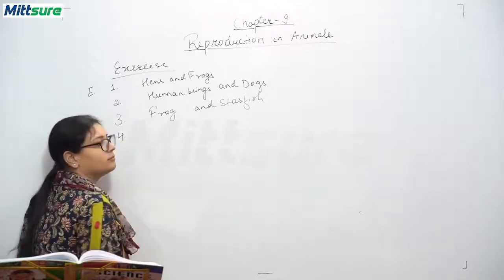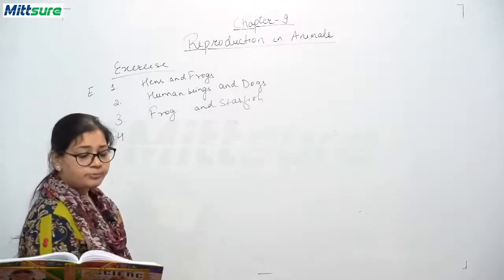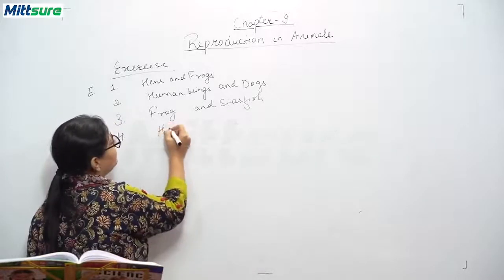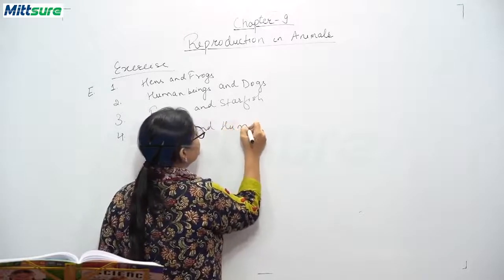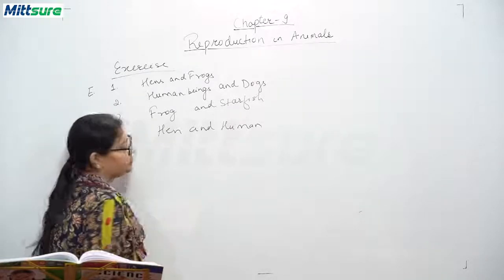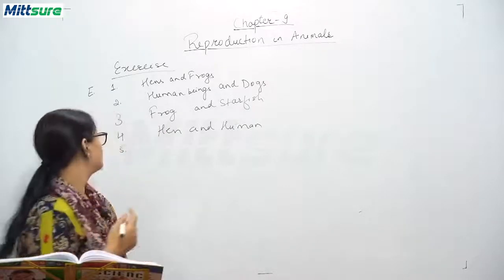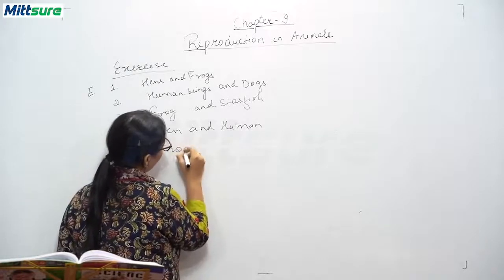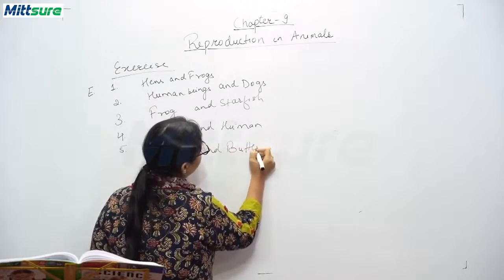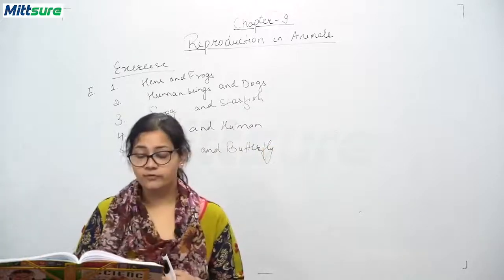Fourth, two animals showing internal fertilization: hen and human. Fifth, two animals which show metamorphosis: frog and butterfly. This completes the answers for Section E — give examples of the following.